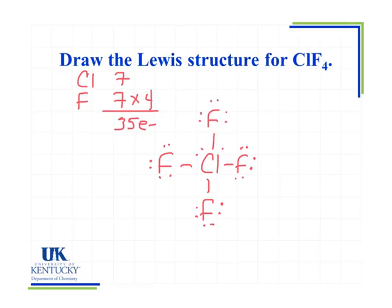In fact, usually when we see ClF4, we actually see ClF4 minus, which would have 36 electrons, and therefore our Lewis structure there would have a complete pair of electrons.